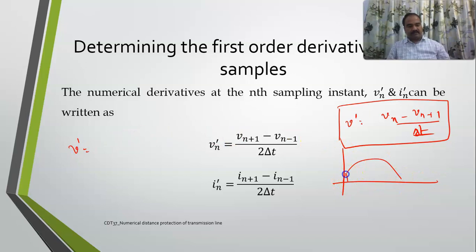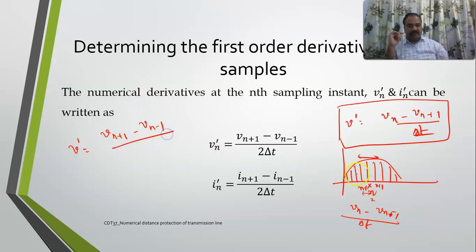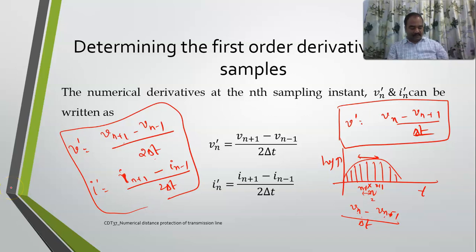Suppose you have samples: if the nth sample is in the middle, and you have n−1 and n+1 on either side, then v' = (vn+1 − vn−1) / (2Δt). Similarly, i' = (in+1 − in−1) / (2Δt). Earlier we used only one difference; now we take two different samples with 2Δt as the difference.